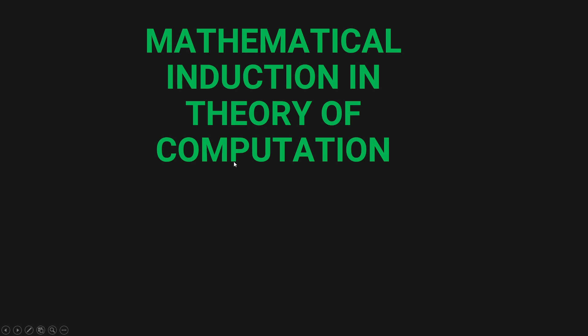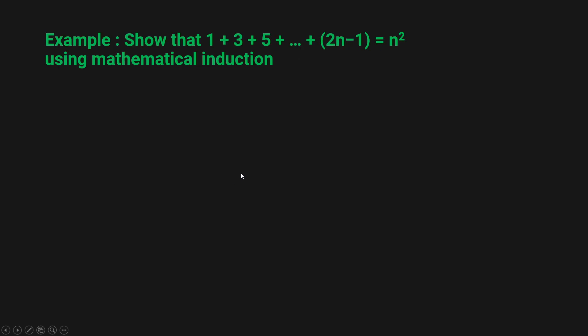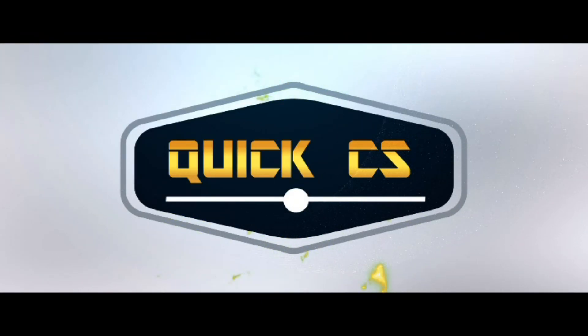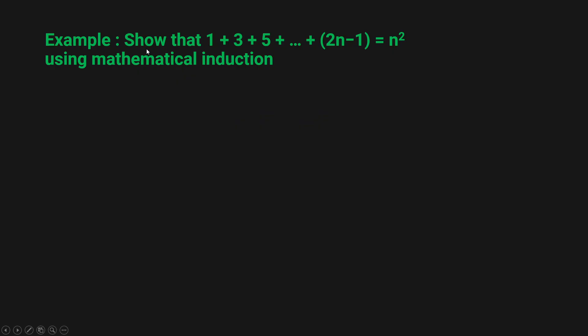Hey guys, welcome to another theory of computation tutorial. Today we'll be looking at another example of mathematical induction in theory of computation. We have been given this example to solve: show that 1 + 3 + 5 + ... + (2n - 1) is equal to n² using mathematical induction.